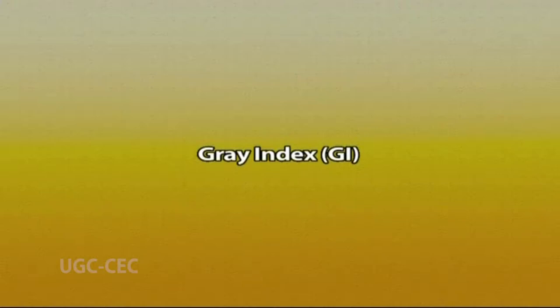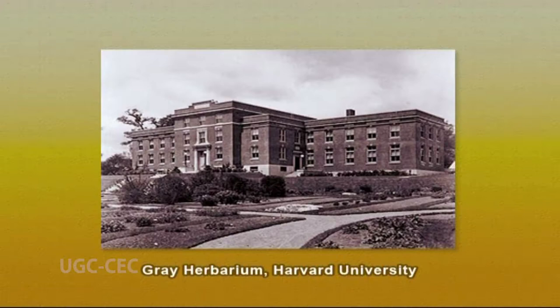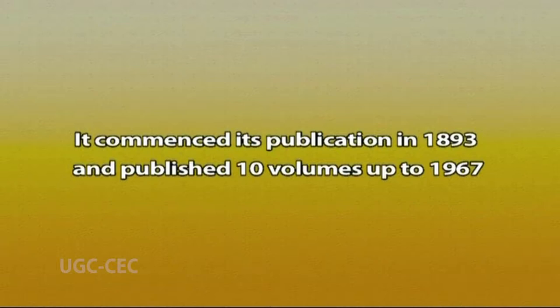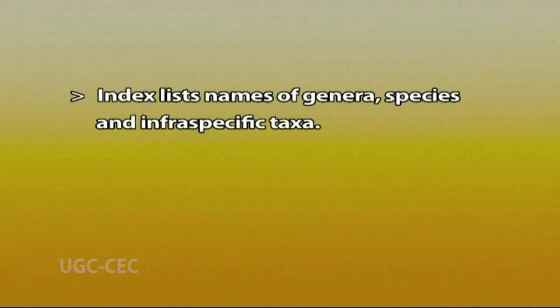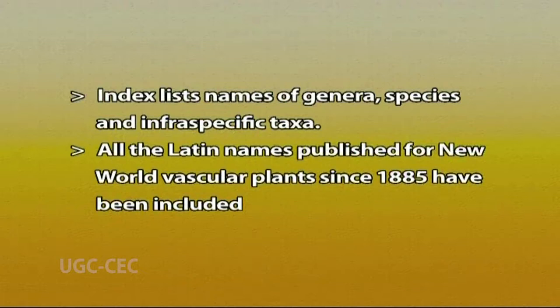After Index Kewensis, the most famous index is the Gray Index, compiled at the Gray Herbarium, Harvard University. It lists all new names and new combinations of names of vascular plants from the New World. It commenced publication in 1893 and published 10 volumes up to 1967. A two-volume supplement covering literature from 1967 to 1977 was published by Hall in 1978. The Gray Index lists names of genera, species, and infraspecific taxa — all Latin names published for New World vascular plants since 1885, arranged alphabetically by genus. In some ways the Gray Index shares commonality with Index Kewensis, as both deal with names of taxonomic groups.